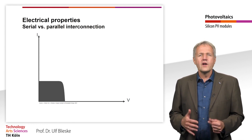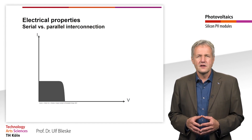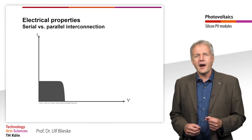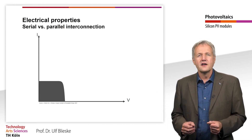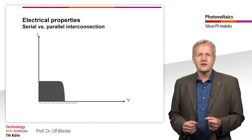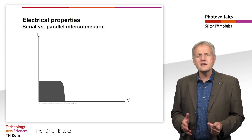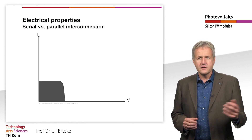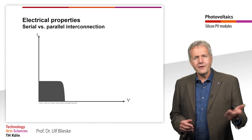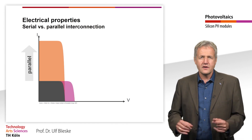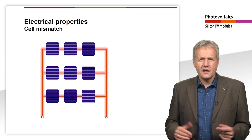Now we look at the efficiency of a solar module. Just as for a solar cell, we can determine the various electrical parameters for a solar module, such as the short circuit current, the open circuit voltage, the fill factor, and the efficiency. The IV curve of a cell string can be derived from that of a single solar cell. The parallel connection of solar cells increases the current of the cell string, while the series connection increases the voltage. What about the efficiency and the fill factor?